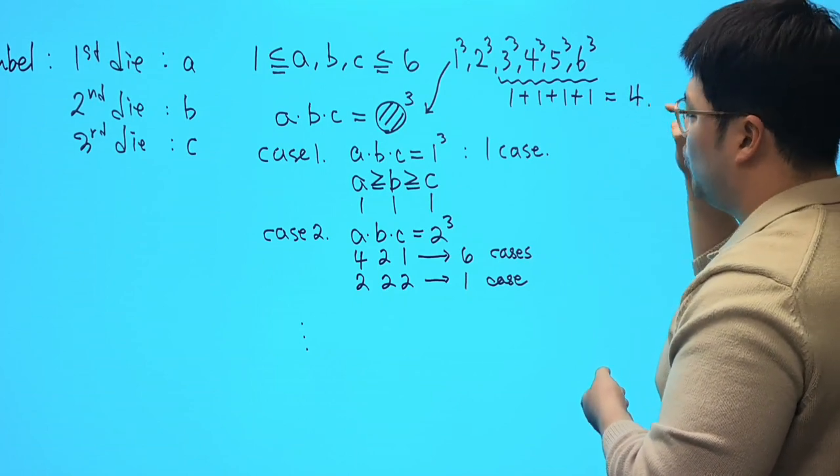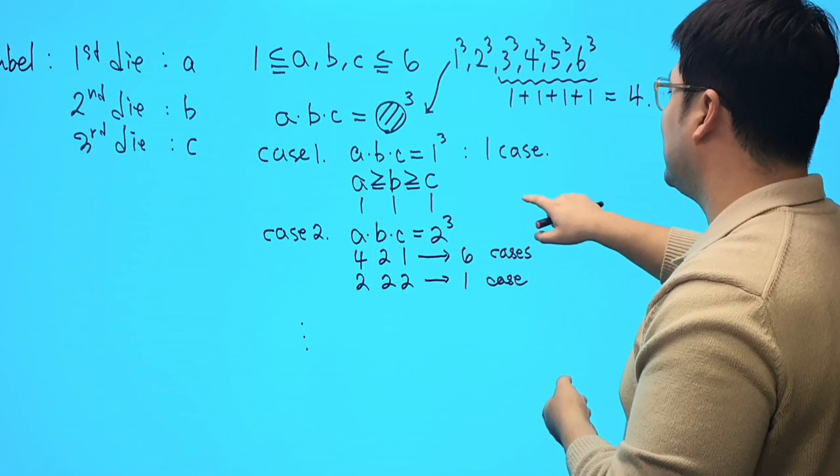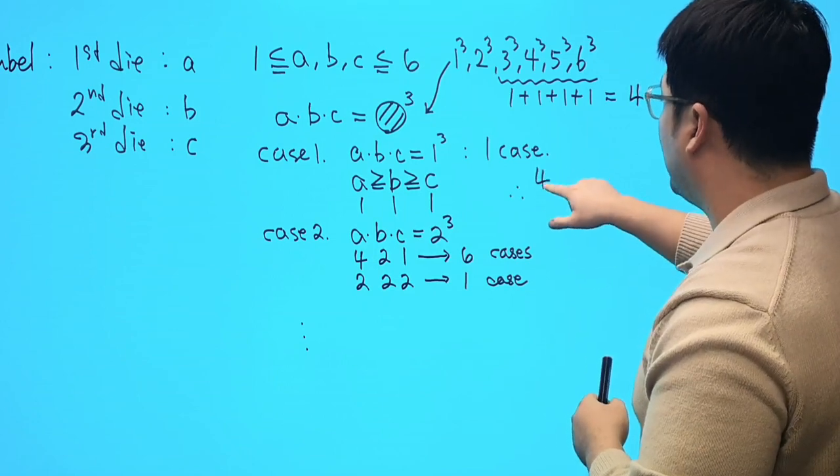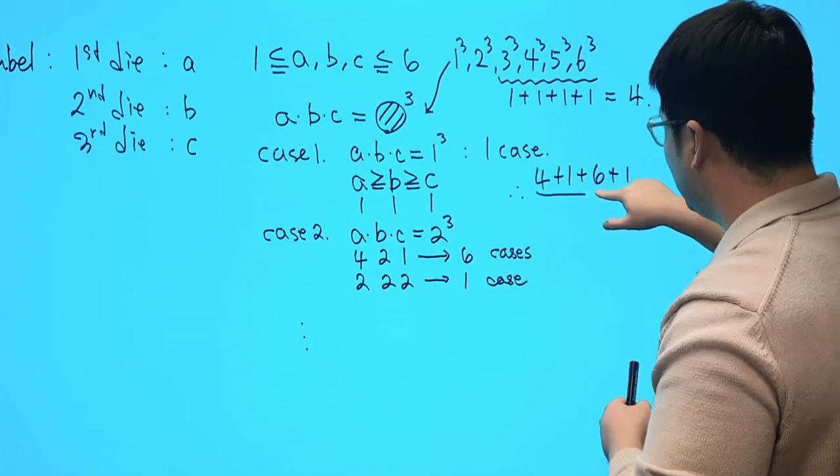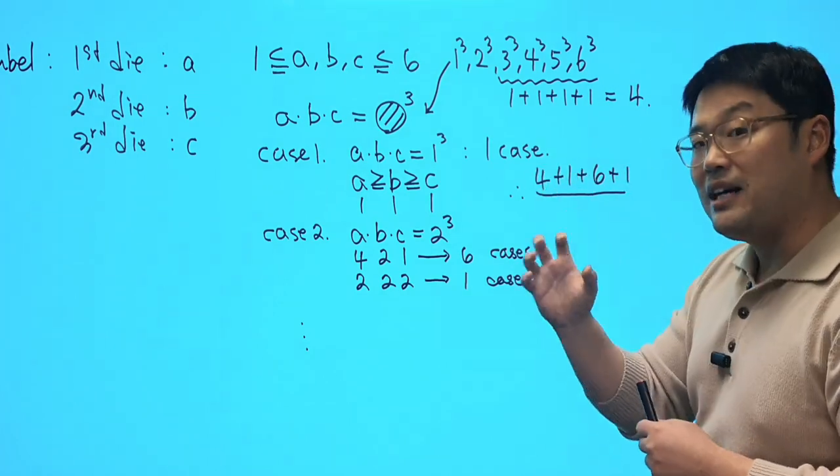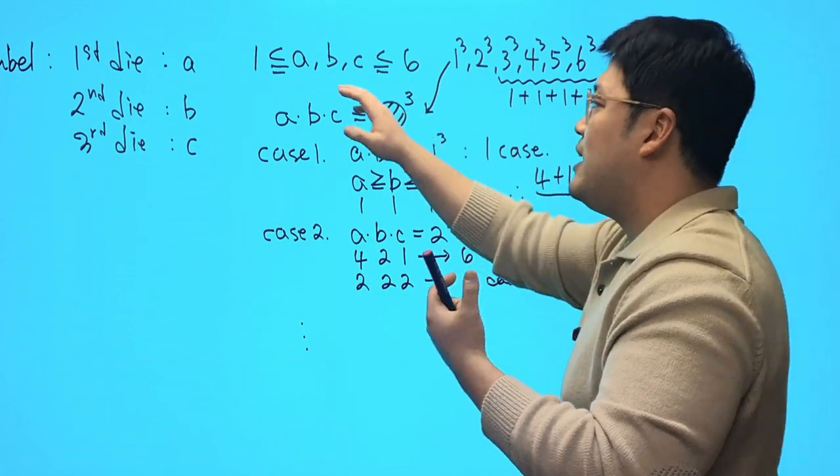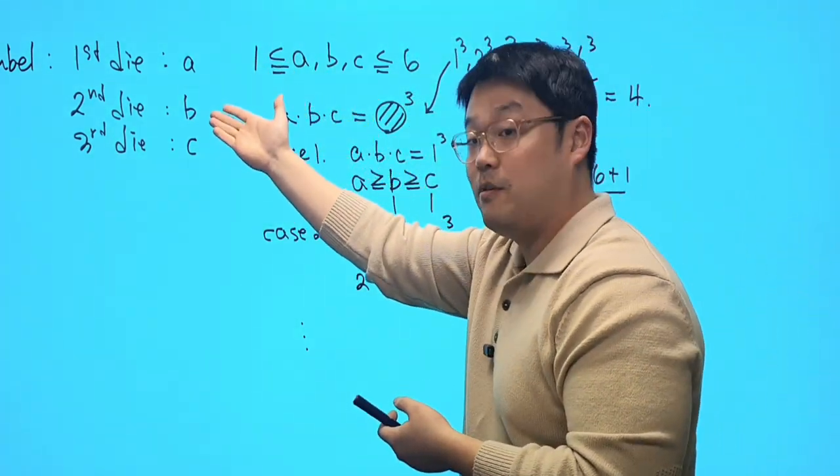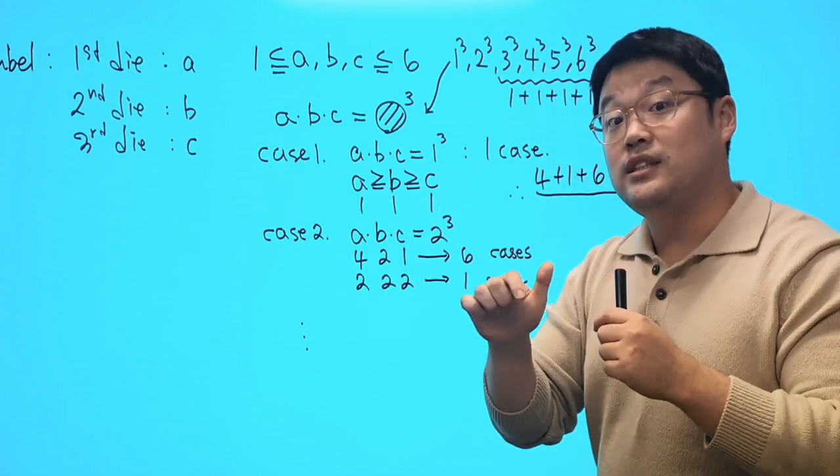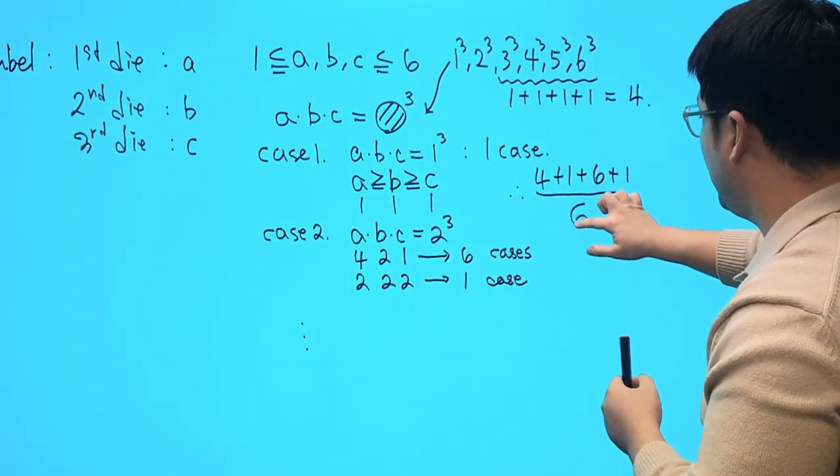So that four cases and one cases and we got seven cases. Imagine we add it up, right? So we get four and one plus six and one. And we're dividing out by total possibilities. And total possibilities, how many cases do we have for A? We got six cases. How many cases that we have for B and C? We still have six cases, right? So it's going to be six to the power of three.